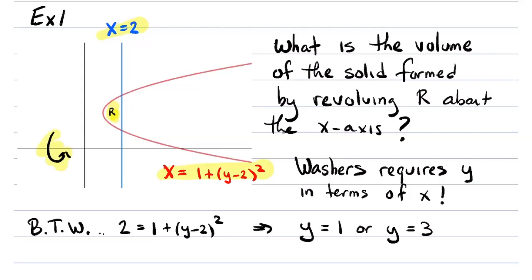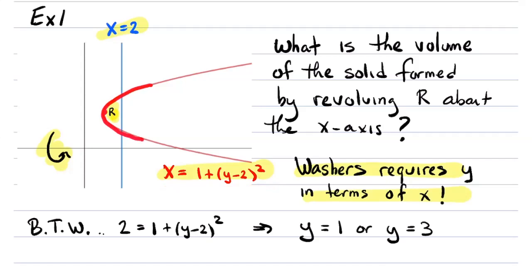If we're going to rotate around the x-axis using washers, we need the inner and outer radius in terms of x, so we'd have to solve for y in terms of x. You can see algebraically that might be tricky — a typical segment sits on that same curve, and solving for y in terms of x requires taking a square root. That square root has a positive value and a negative value, because that red curve is not a function of x — it's a function of y.